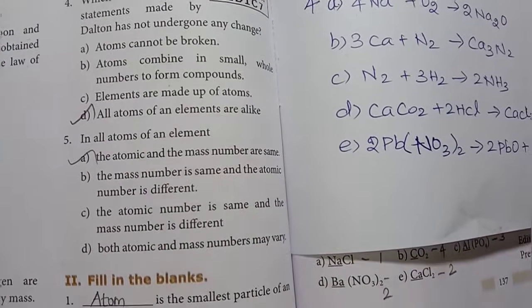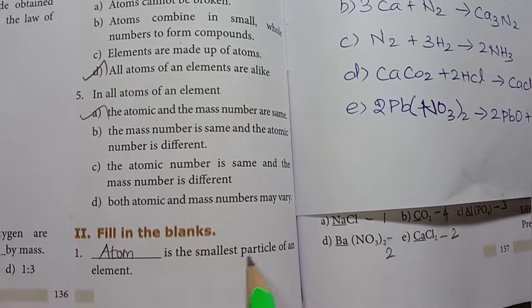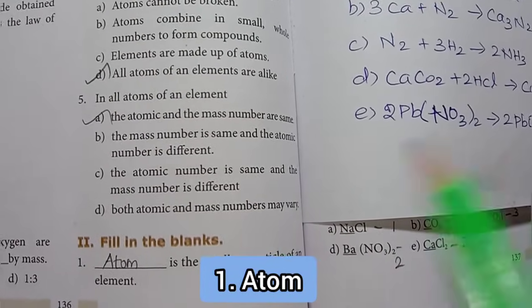Roman numeral 2, fill in the blanks. Blank is the smallest particle of an element. Atom is the answer.